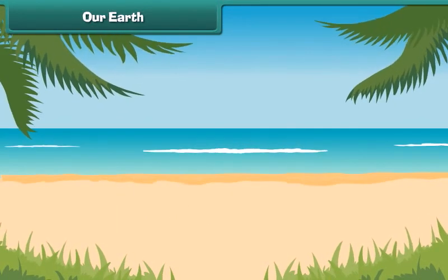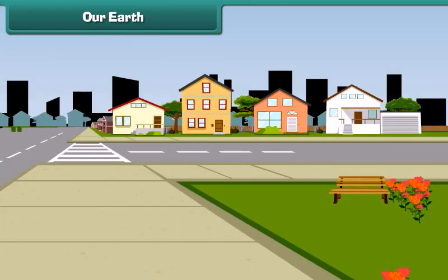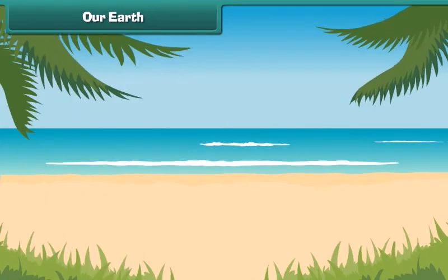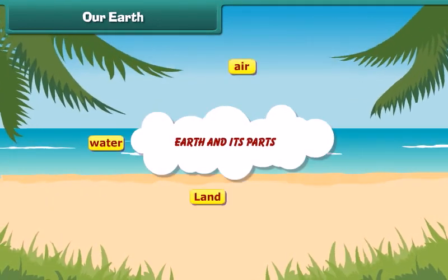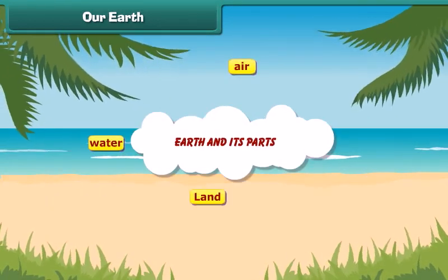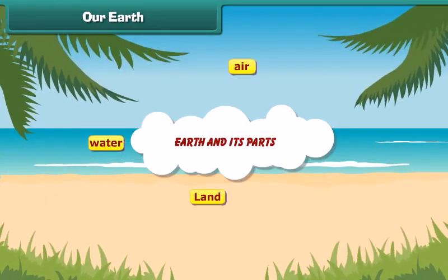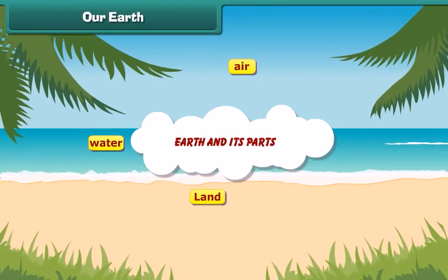Friends, we live on a planet called Earth. It also gives us land to make roads, houses and buildings to live in and work, and parks to play around. The air, water and land are three major parts of our Earth. Now let's learn about these parts of Earth in detail.